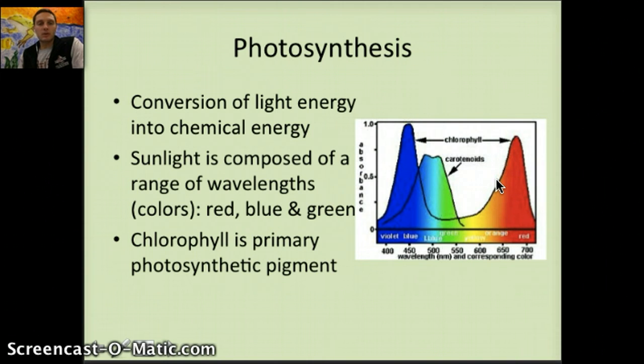The chlorophyll is the primary photosynthetic pigment, so what's accepting the light. And we can see here that red and blue and green are some of the different colors that are used, with blue providing the most absorbance, followed by red, and then green is third.